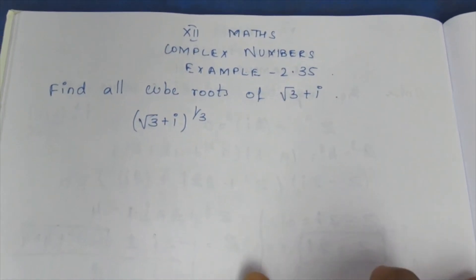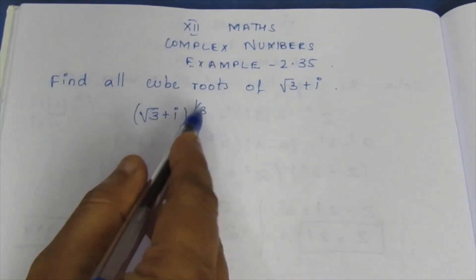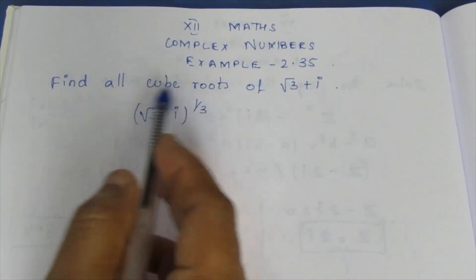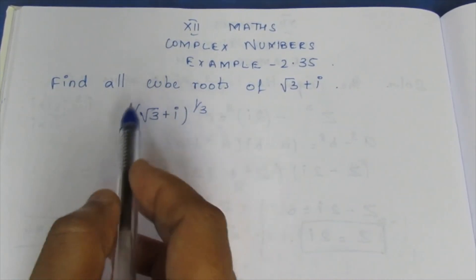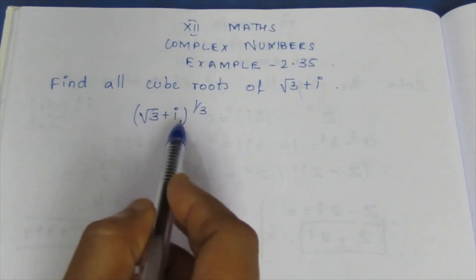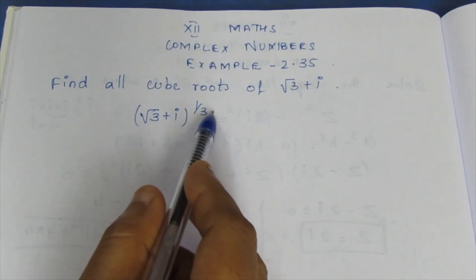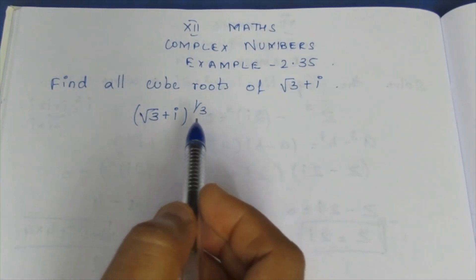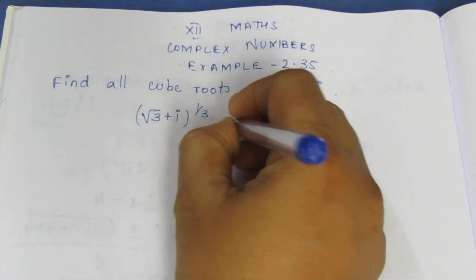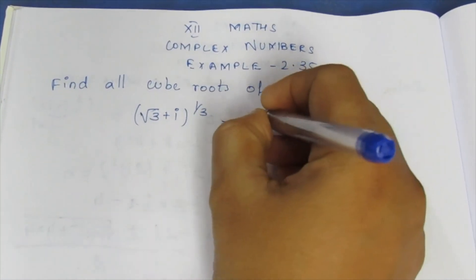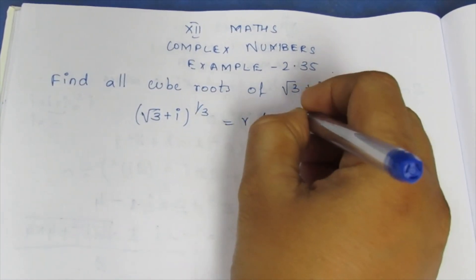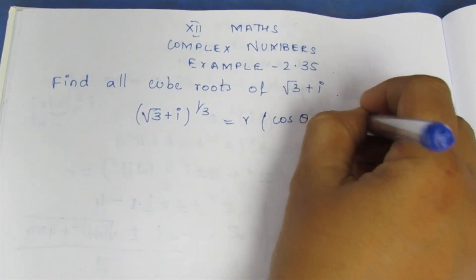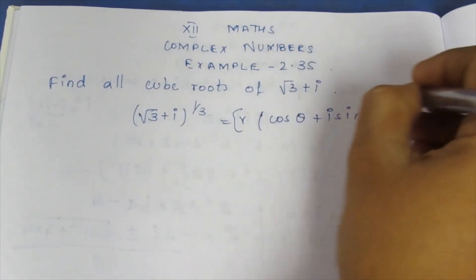We need to find the complex number value using polar form. We will convert to polar form and raise it to the power 1/3. In polar form: R [cos θ + i sin θ] raised to the whole power 1/3.